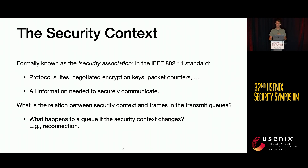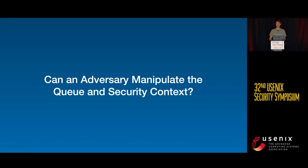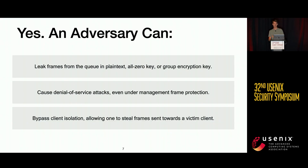We looked at how the security context is managed and how it relates to the queues. What happens to these queues if the context changes — if a client reconnects and establishes a new key? Should anything happen to the queues? Put differently, we asked: can an adversary manipulate the interaction between these queues and the client's security context?